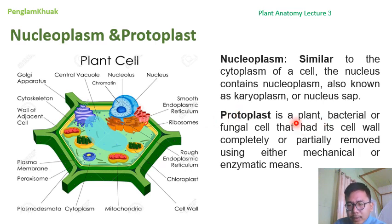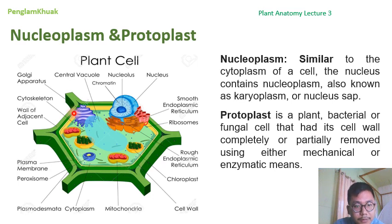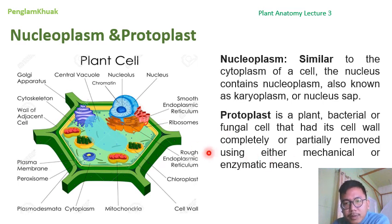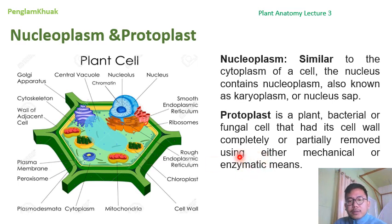Now, regarding protoplast — we already know that plants, bacteria, and fungi have a cell wall outside their plasma membrane. This is a plant cell; this is the cell wall shown in green. If you remove this cell wall, you will find only the plasma membrane plus all the cell organelles. A plant cell lacking the cell wall is called a protoplast, and the cell wall can be removed partially by mechanical and enzymatic means using certain enzymes to dissolve it. So in simple terms, any plant, bacterial, or fungal cell that lacks the cell wall is called a protoplast.